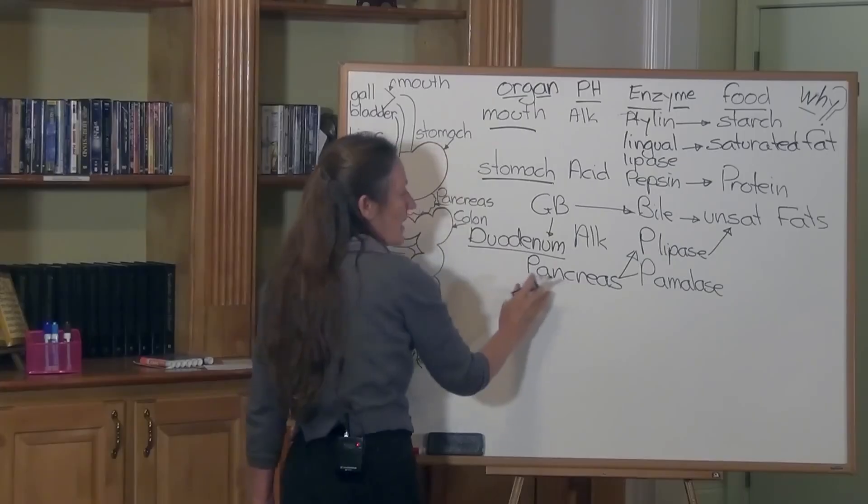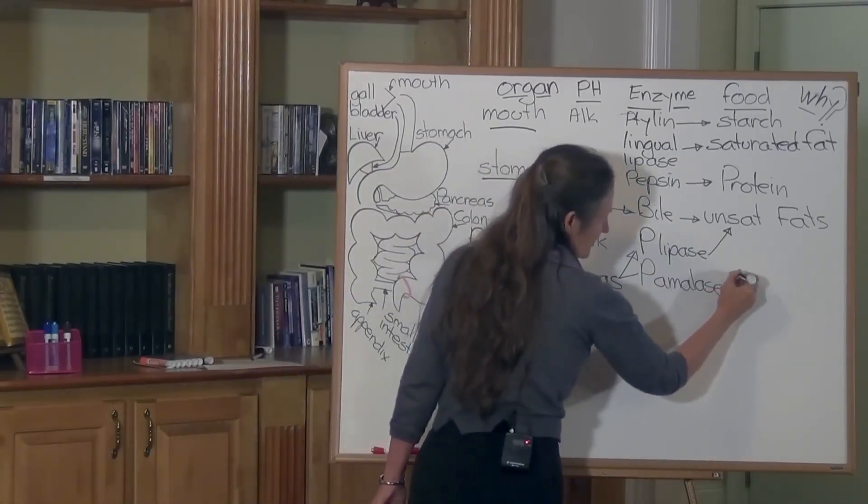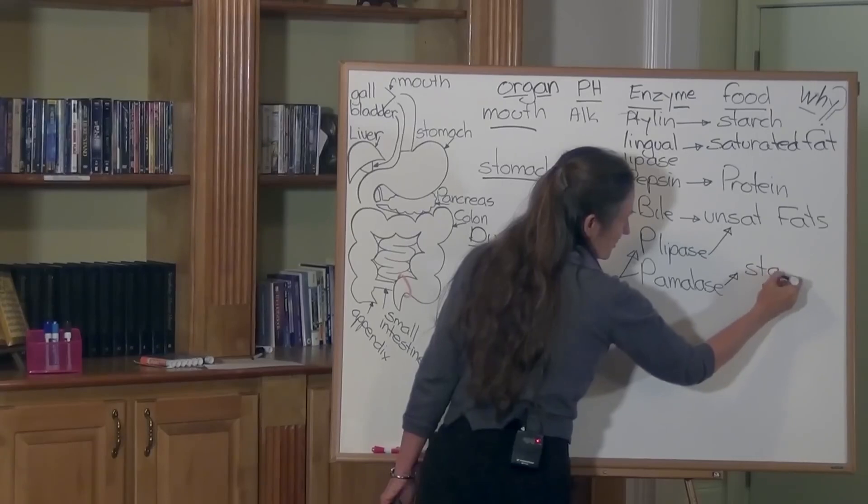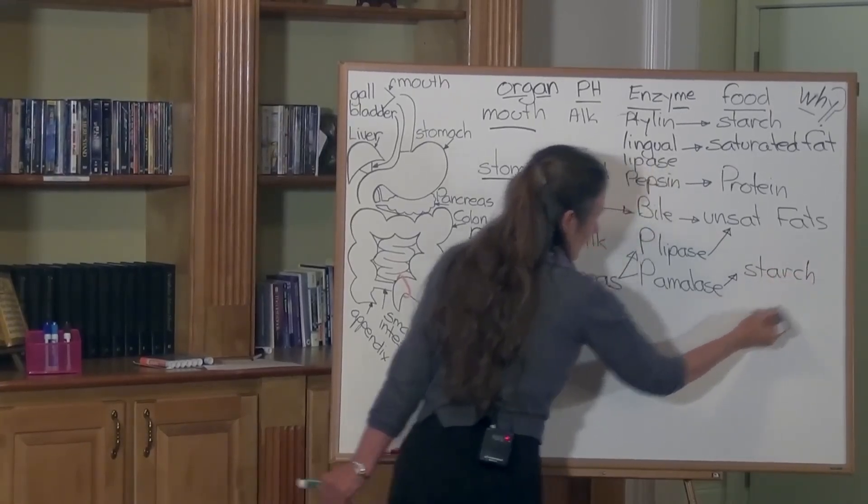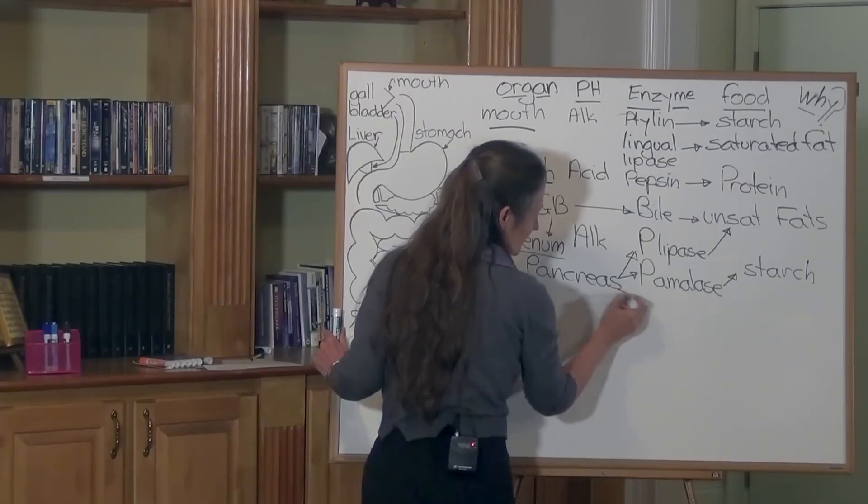What's also released in the pancreas is trypsin. Comes to the duodenum and pancreatic amylase finalizes the starch digestion. What's also released in the pancreas is trypsin.